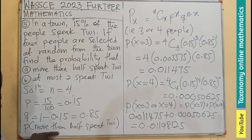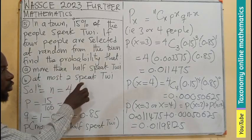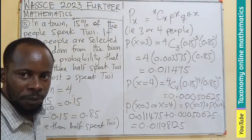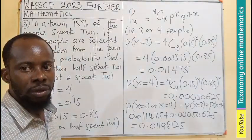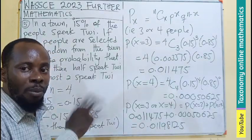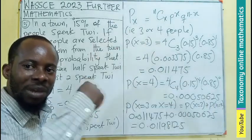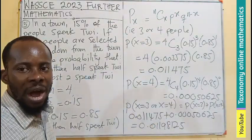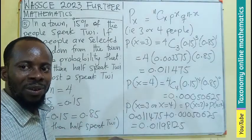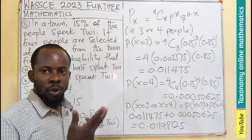The probability that more than half speak three equals P(X=3) plus P(X=4): 0.011475 plus 0.00050625, which gives us 0.01198125. We can leave the answer in this form or truncate it to a specified number of decimal places.